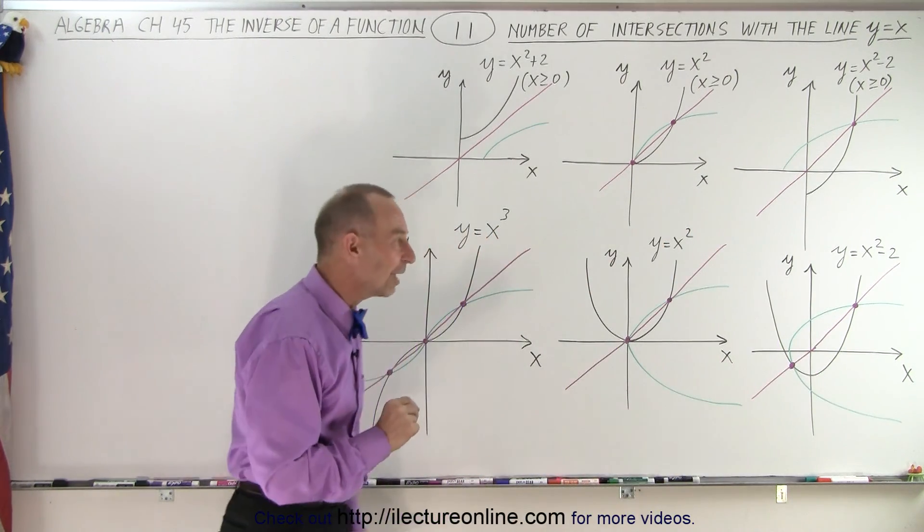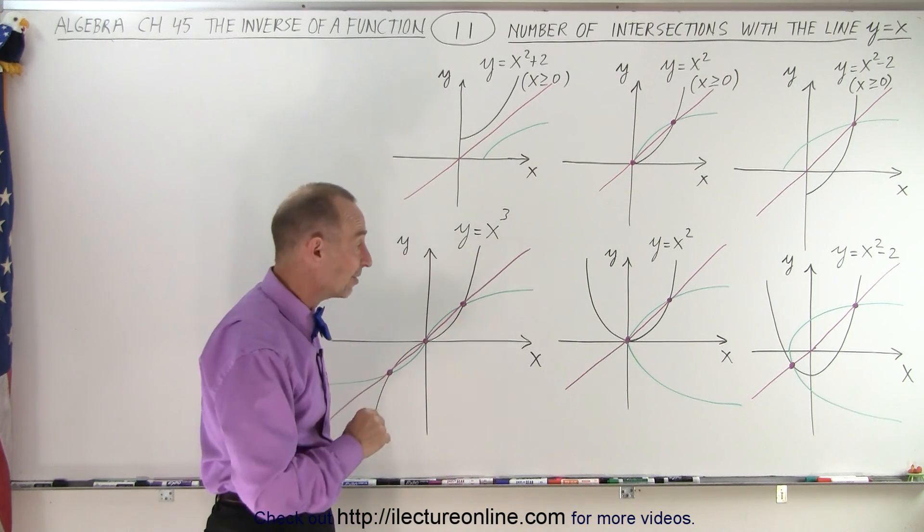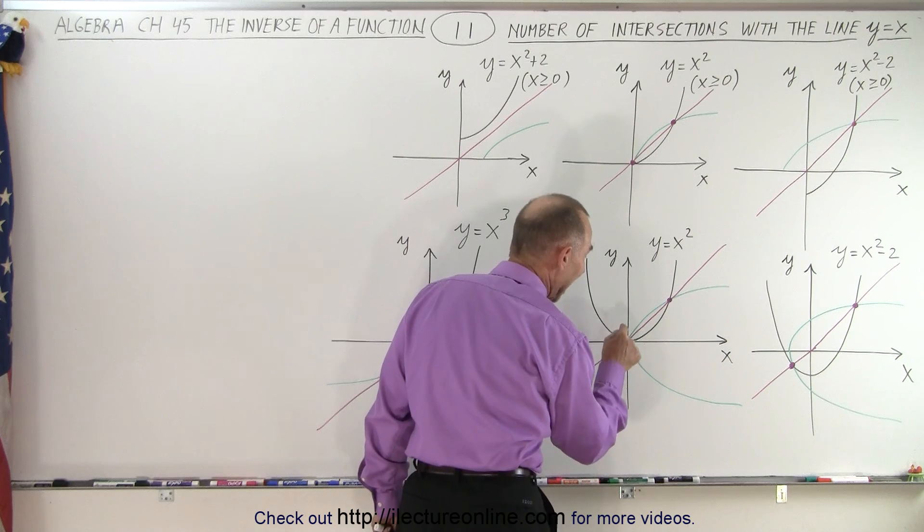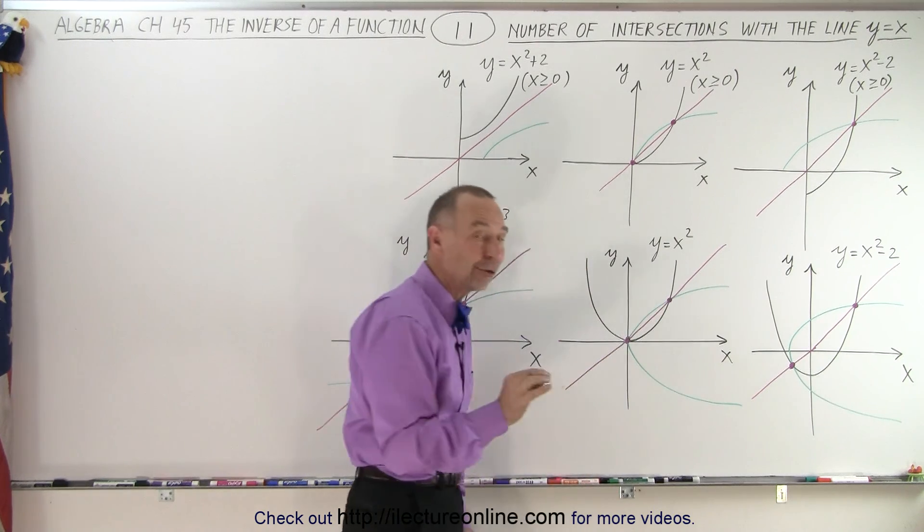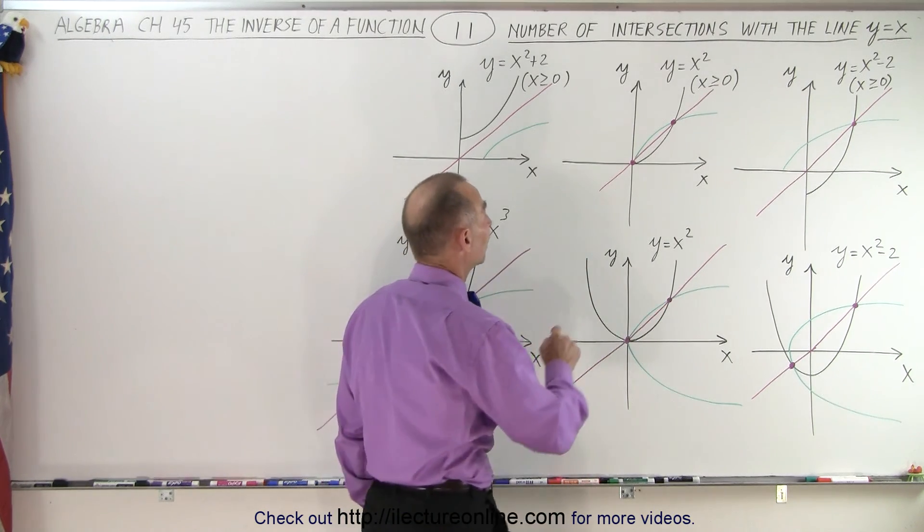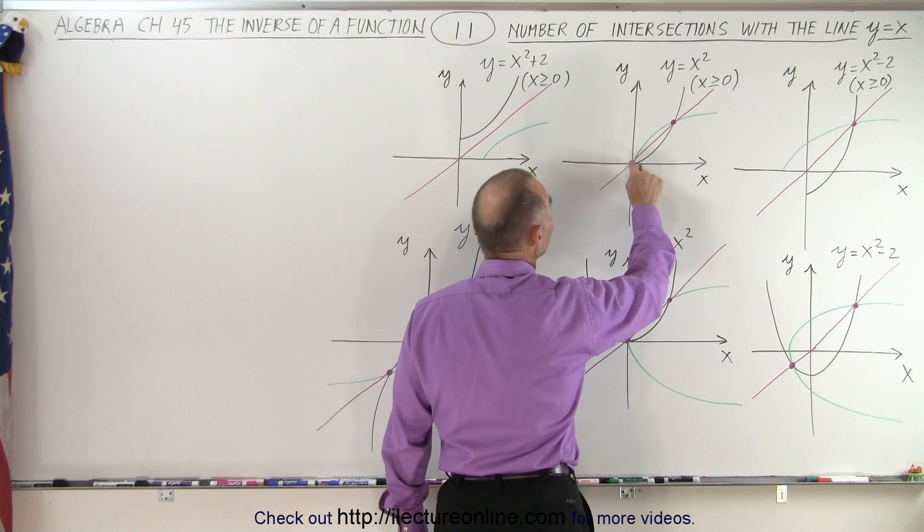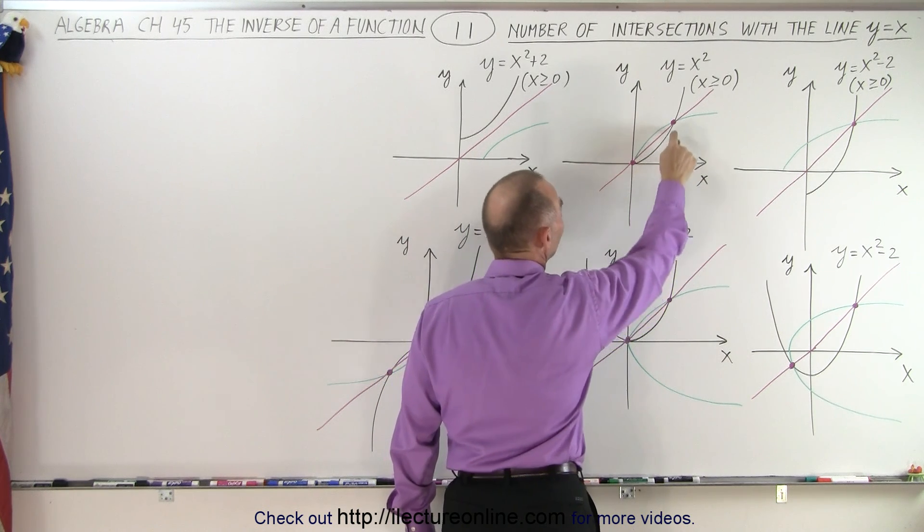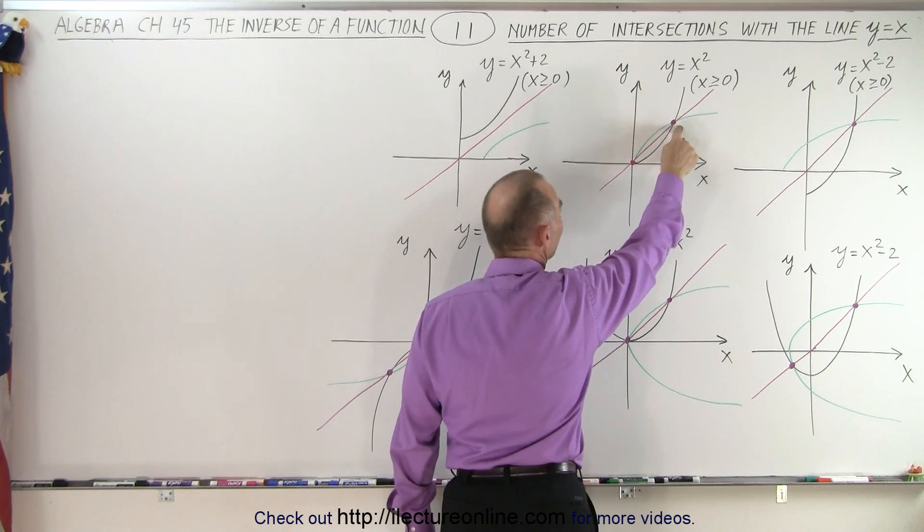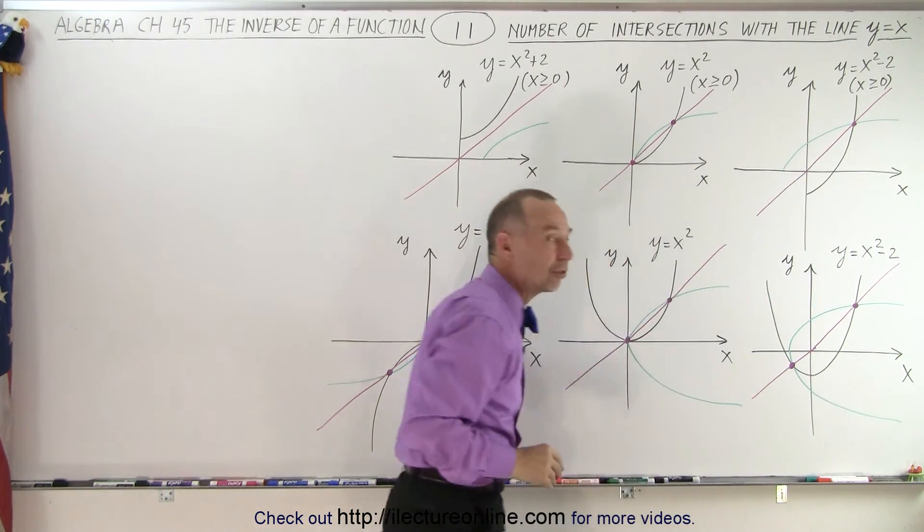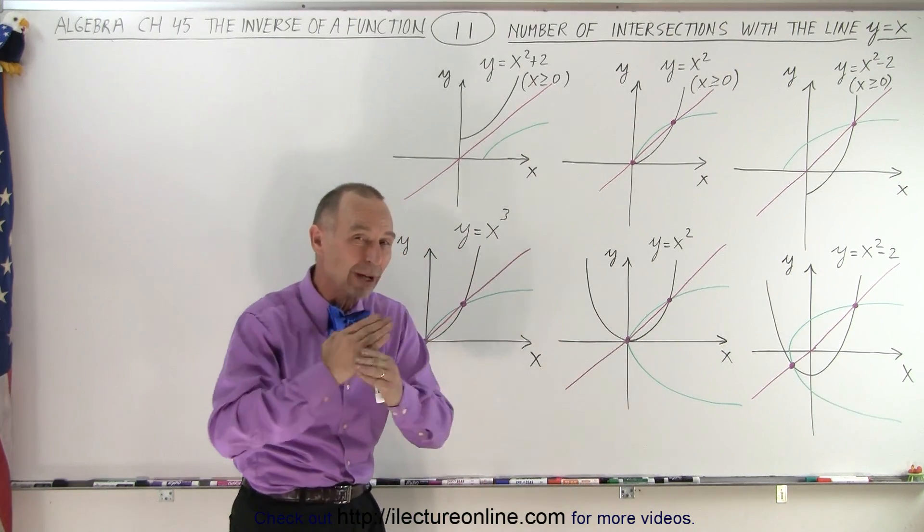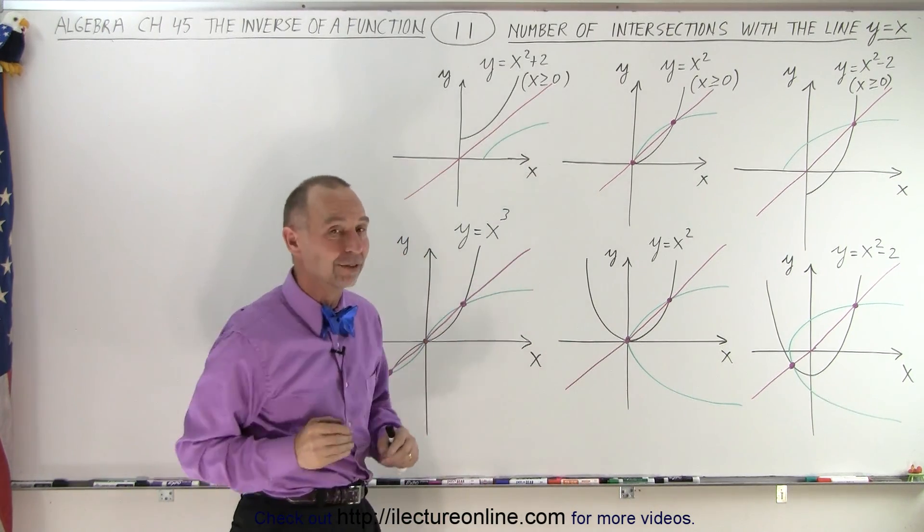Now what is interesting is where did they cross the y equals x line? Well, it turns out they crossed the y equals x line at the very same point, and that's a very unique concept right here. Take a look there. You see that right here, they cross this point, both the inverse of the function and the function itself. Here again, the inverse of the function and the function itself. Wherever the line is crossed, both the function and the inverse of the function cross that y equals x line at the very same place.